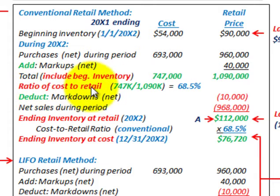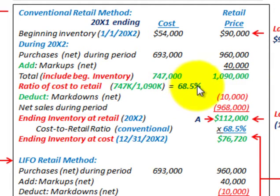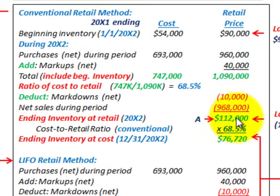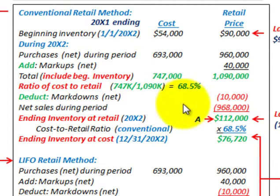Now we calculate our ratio of cost to retail. We take the cost of $747,000 divided by the retail price of $1,090,000, arriving at a cost-to-retail ratio of 68.5%. We then deduct our markdowns and net sales from our total to determine our ending inventory at retail of $112,000. Multiplying 68.5% times that ending retail inventory, we get ending inventory at cost of $76,720.